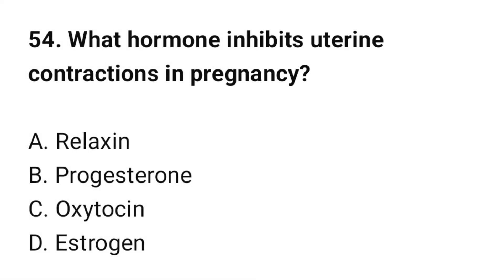Question number 54. What hormone inhibits uterine contractions in pregnancy? The correct option is B: progesterone.